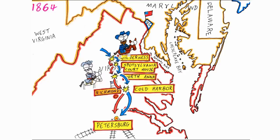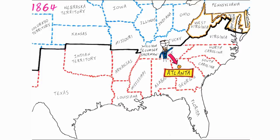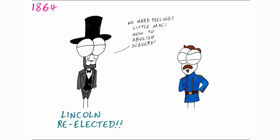Lee moved to defend Petersburg as it was the railway supply line for the capital. Grant's forces dug trenches and a 10-month siege ensued. Meanwhile, Union forces under William Tecumseh Sherman moved from Chattanooga and captured Atlanta, Georgia in September 1864. Other Union forces swept along the Shenandoah Valley, fighting the only remaining Confederate army, ultimately defeating them.